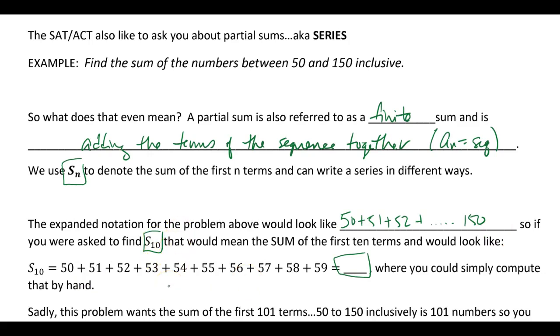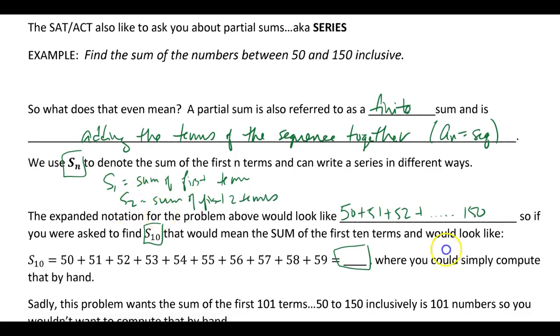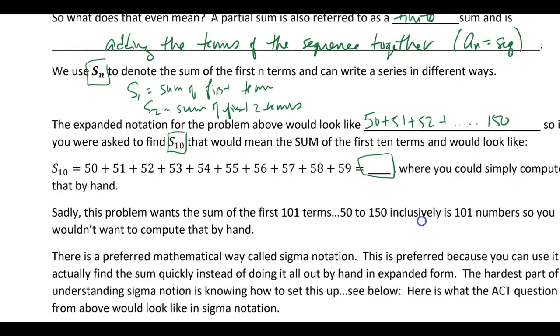So S sub 1 would just mean the sum of the first term. S sub 2 would mean sum of the first two terms. So hopefully you get the idea. You have to actually add stuff together to get your S sub n's.